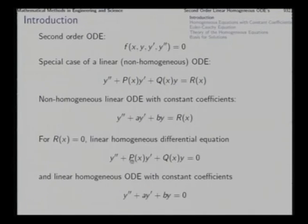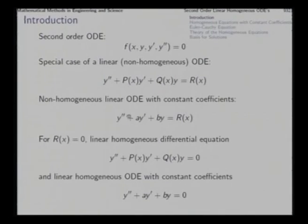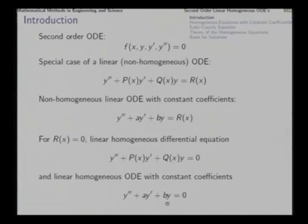We will consider these cases progressively: first the linear homogeneous ODE with constant coefficients, then the non-homogeneous case, and finally the general linear second-order ODE with variable coefficients. Before attacking the general second-order linear ODE, we will consider these special cases, and in the next lecture we will start with the simplest case for which the solution will be found very easily. Thank you.